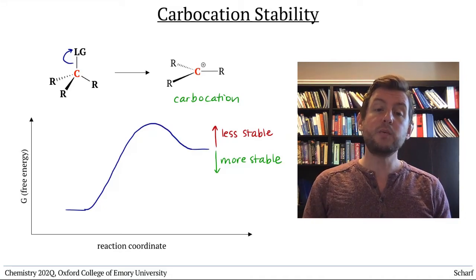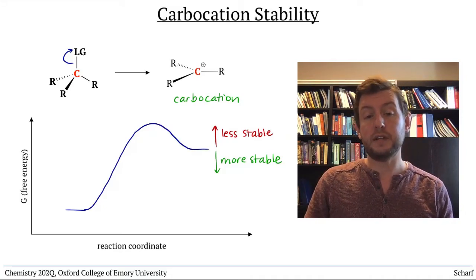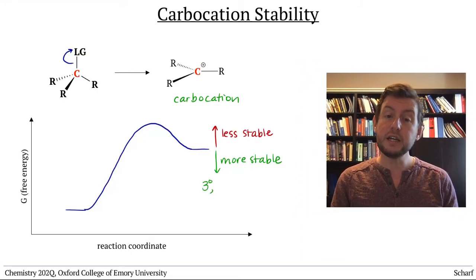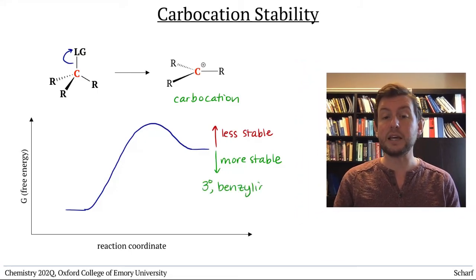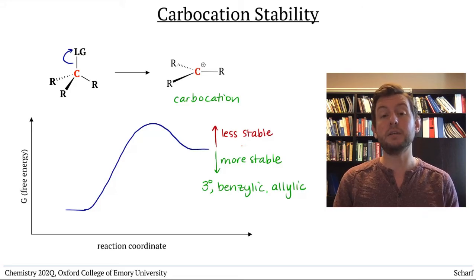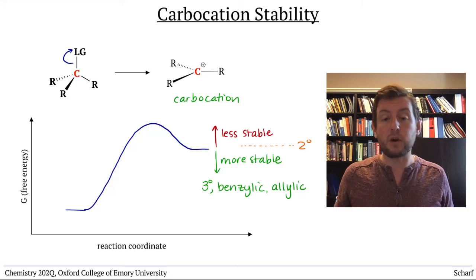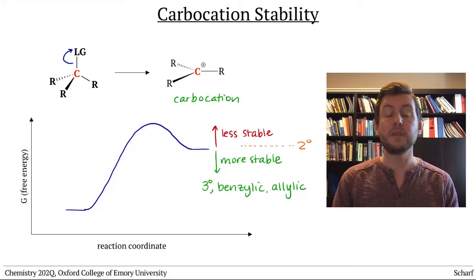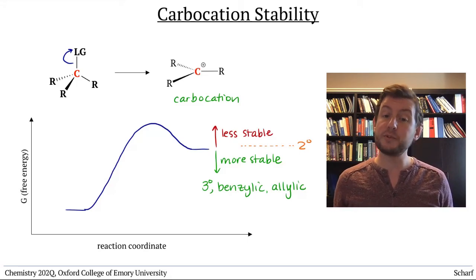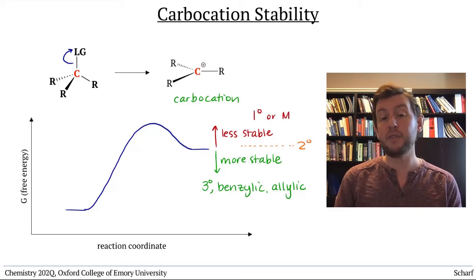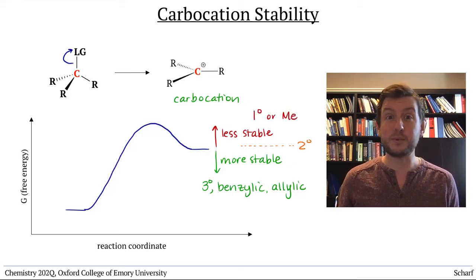For reasons that we'll explain in detail in a future video, tertiary, benzylic, or allylic carbocations are by far the most commonly formed. But secondary carbocations can be formed, albeit quite slowly. Primary carbocations are almost never formed, and the methyl carbocation has never been observed on Earth.